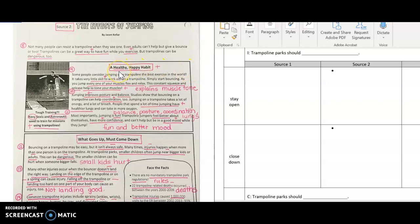We went through and we read this text together, Source 2, the effects of jumping. We annotated the text, meaning we underlined important ideas.